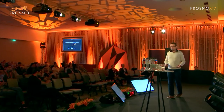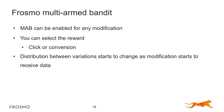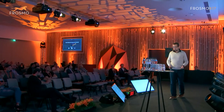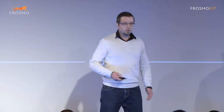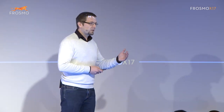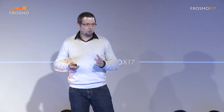Now, a little about how it works in Frosmo. This feature is available for any modification — you can enable it for any modification and create as many as you want, meaning you can create as many multi-armed bandits as you want. You select the reward — either a click or a conversion — and the distribution between variations starts to change immediately. One modification is always one bandit, and different variations are the arms for that bandit.